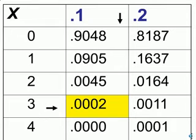So, lining up that row and that column, we now have the probability for exactly three accidents. And that is a pretty low probability, 0.0002.